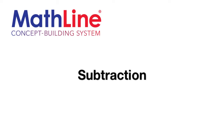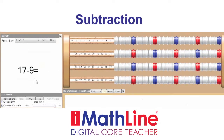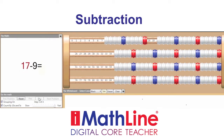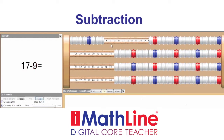Now let's do a basic subtraction problem. Take seventeen minus nine. We set up the problem seventeen minus nine using the iMathLine Core Math Teacher. We start out by putting seventeen on our MathLine. We subtract nine — count nine and subtract. We see a difference of eight and write it in the problem.